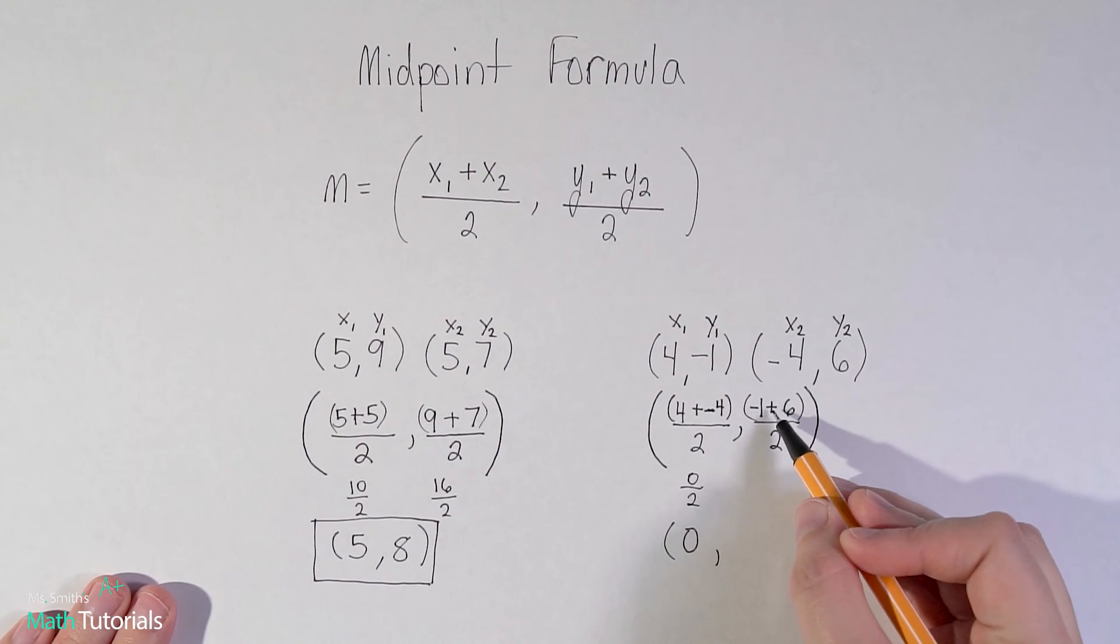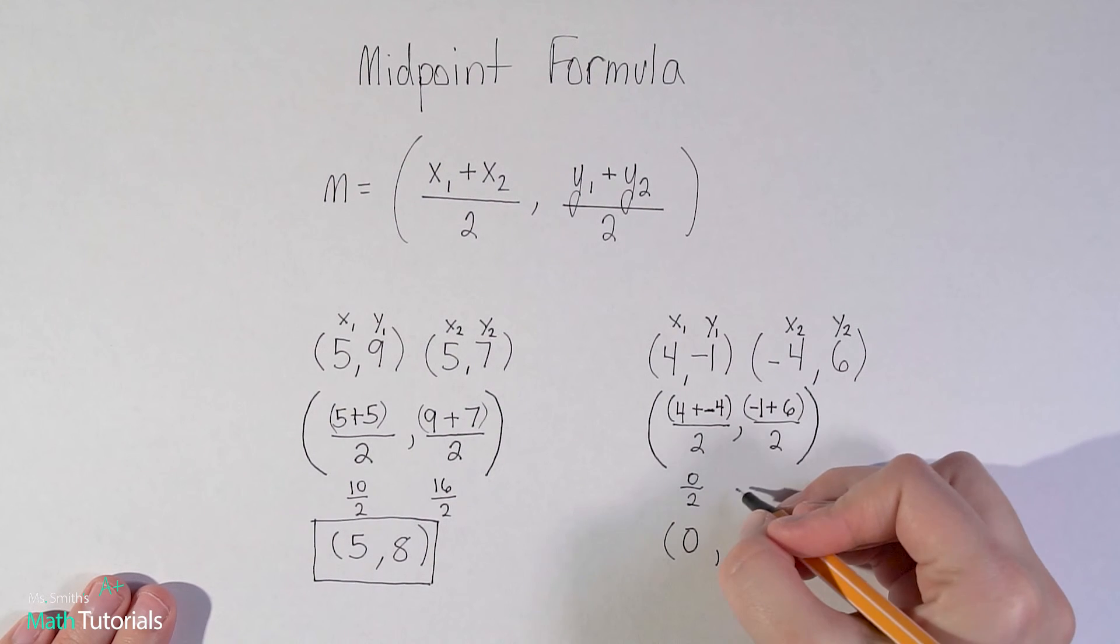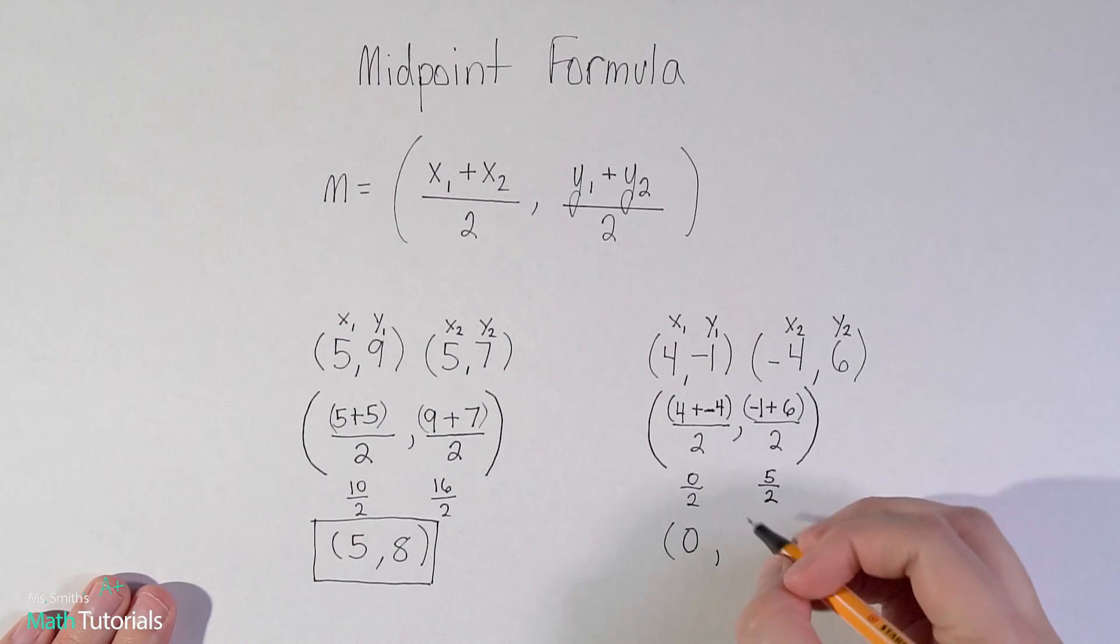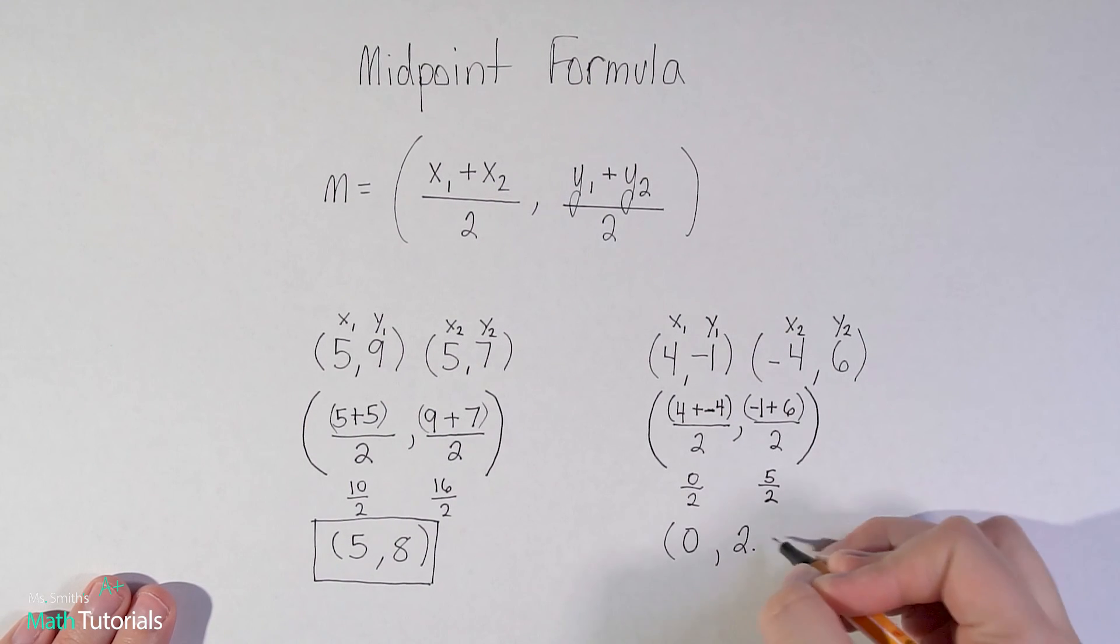For my y value, negative 1 plus 6 that would give me 5, and 5 divided by 2. That's going to be a decimal so it doesn't come out perfectly. You could write 5 over 2 or you could write 2.5. We'll just say 2.5.